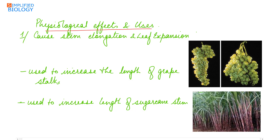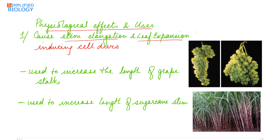The main effect of gibberellin is that it is capable of increasing the length of the plant. First, it causes stem elongation and leaf expansion — stem elongation by inducing cell division and cell elongation in the internodal region.